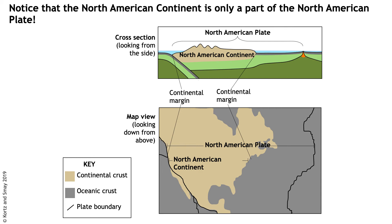In both map and cross-section view, continental crust is indicated by a brownish-tan layer, and oceanic crust is shown in gray — with water stripped away in the map view. The green layers are parts of the mantle. Notice that the North American continent is only a part of the North American plate, emphasizing the difference between a continent and a tectonic plate. All tectonic plates have oceanic crust, and some also have continental crust — the North American plate is an example of both.